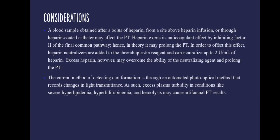A blood sample obtained after a bolus of heparin or through heparin-coated catheters may affect the Prothrombin Time. Heparin exerts its anticoagulant effect by inhibiting factor 2 of the final common pathway of coagulation. Hence, it may prolong the Prothrombin Time. In order to avoid this, heparin neutralizers are added to the thromboplastin reagent, which can neutralize up to 2 units per ml of heparin. However, excess heparin may overcome the ability of the neutralizing agent and prolong the Prothrombin Time.